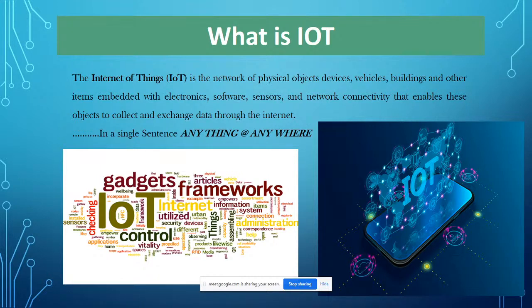This is the definition of IoT — how IoT works: exchanging data through the internet, analyzing data, transmitting from one device to another device, checking signals, and processing. Data is transmitted from one device to another device for processing.